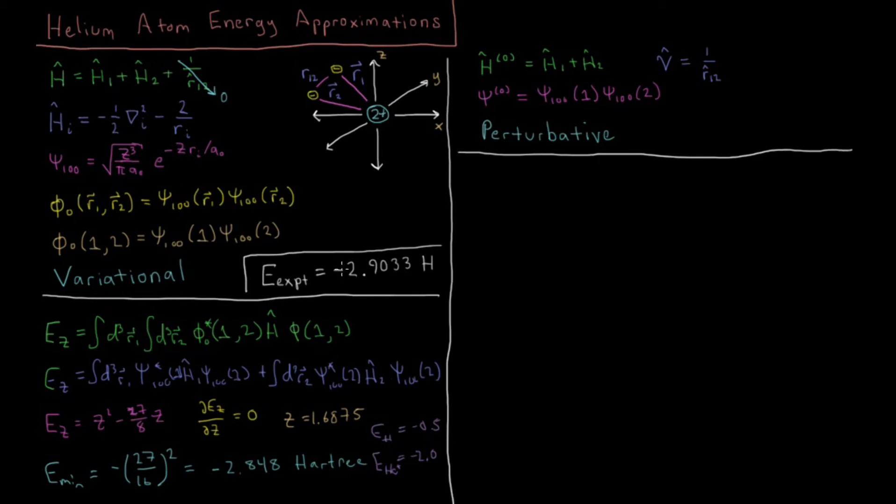And this compares reasonably well to the experimental energy of the helium atom, the energy that it would take to remove both electrons from the atom away to infinity, 2.9033 Hartree, so even ignoring this 1 over R12 operator, ignoring the electronic repulsion, we get an energy which is not completely terrible. So variational approaches are definitely valid, and what we're going to look at next is variational approaches which are more systematic for atoms, and then eventually molecules.